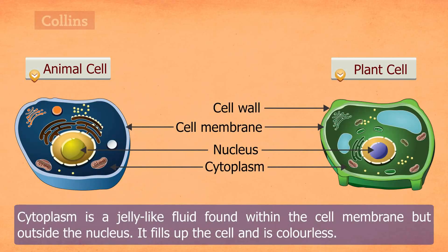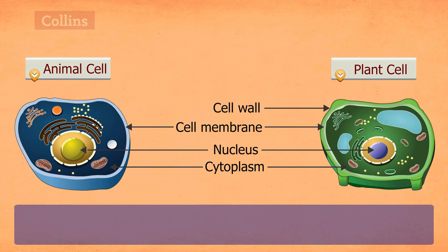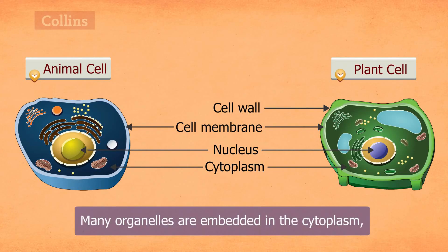Cytoplasm is a jelly-like fluid found within the cell membrane but outside the nucleus. It fills up the cell and is colorless. Many organelles are embedded in the cytoplasm.